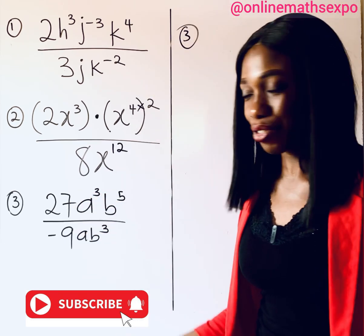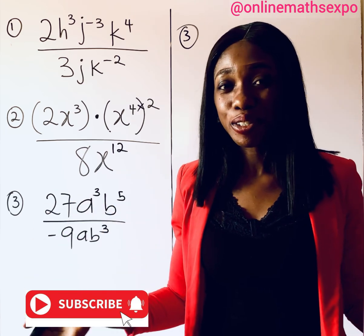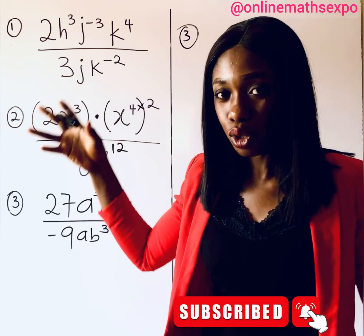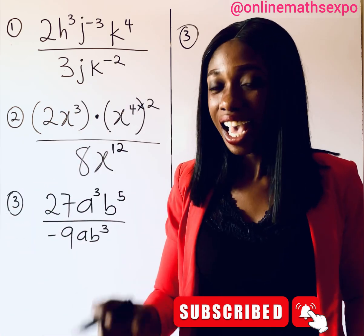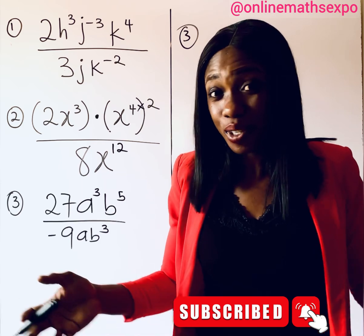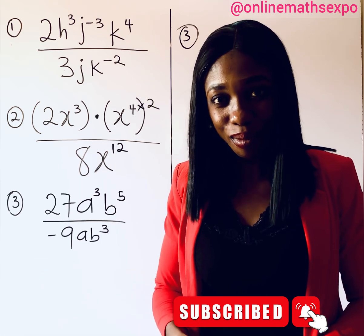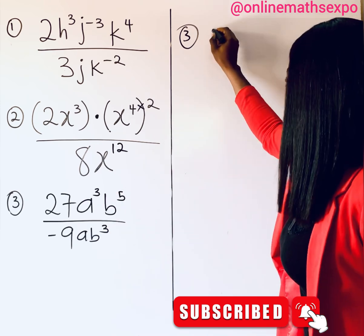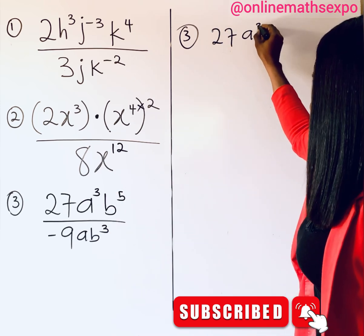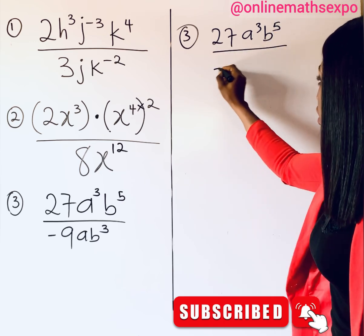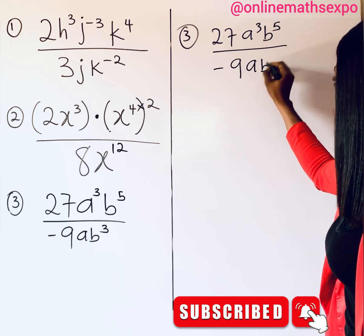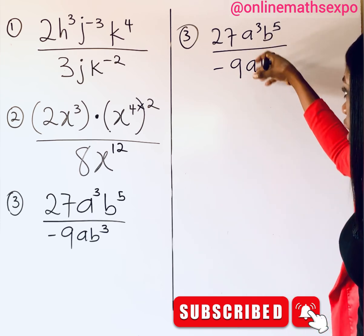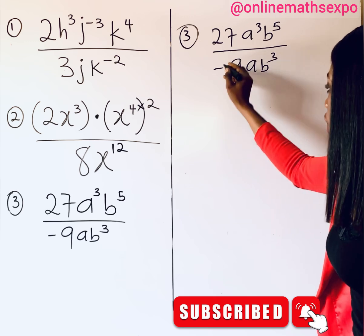Now for question number 3. Remember: sharing this video helps more people who have challenges with these skills to learn. Please share and give this tutorial a thumbs up, and subscribe for more tips. For number 3 we have 27a cubed b to the power of 5, over negative 9 times a times b cubed.